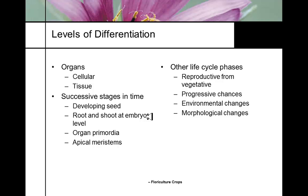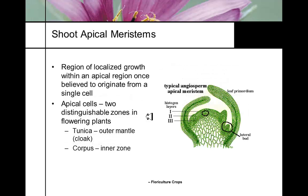The phase can be changed by environmental conditions, and there are also morphological changes. For instance, English ivy is a ground cover in its juvenile stage, but in its adult stage it's actually a shrub. In plant propagation, juvenile phase tissue is much easier to root than adult phase tissue.